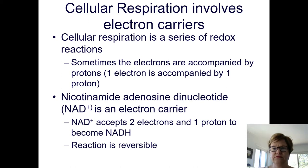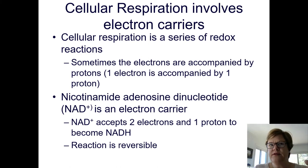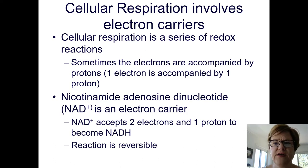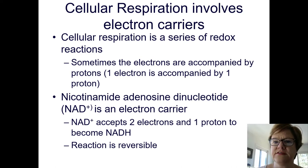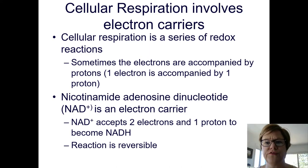Reduction happens when something accepts or gains electrons; oxidation happens when something releases or gives away electrons. In any transfer of electrons, there must be one participant that gives away electrons and one that receives them — so there's always one party that is reduced and the other that is oxidized. Because both always have to be part of the reaction, we call that kind of reaction a redox — 'red' for reduction and 'ox' for oxidation. What's really happening is electrons are being transferred from one molecule to the other.